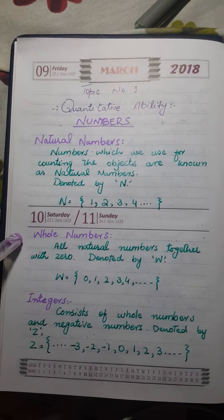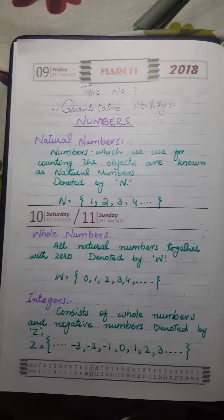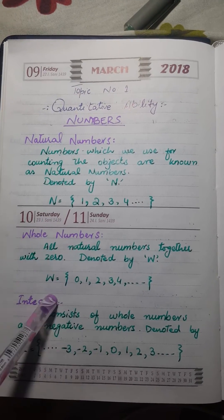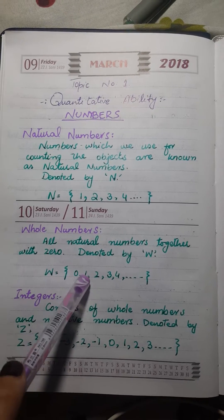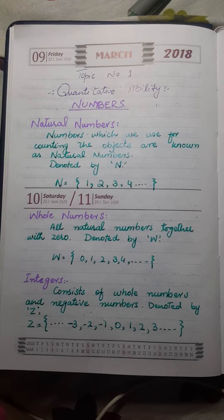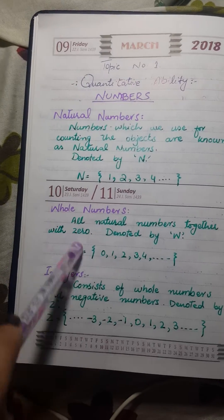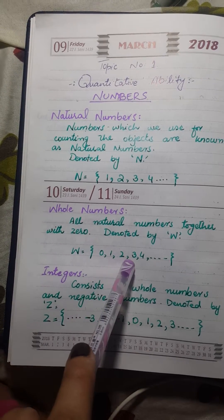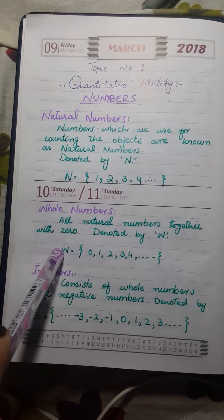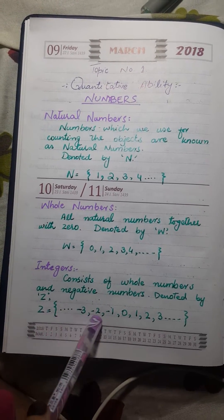Second are whole numbers. Whole numbers are actually the natural numbers together with zero. When we add zero to the natural numbers they become whole numbers. Next, integers consist of whole numbers and the negative numbers. All the whole numbers — 0, 1, 2, 3, 4, 5 — and if we add the negatives: minus 1, minus 2, minus 3, minus 4 and so on, they become integers.